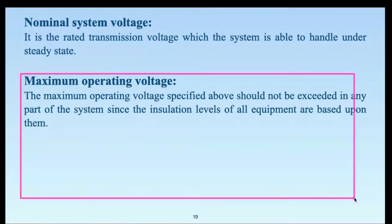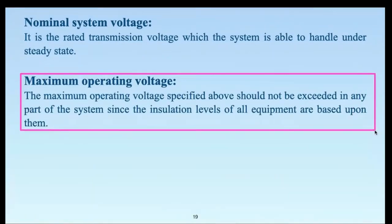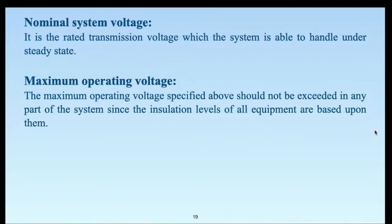The maximum operating voltage is the voltage specified in the list and it should not be exceeded in any part of the system. This is the voltage level on which the insulation level of all equipment is based. The relation between maximum operating voltage and nominal system voltage varies — it may be up to 10 percent higher at 132 kV, and around two to three percent higher at the voltage level of 750 to 765 kV.